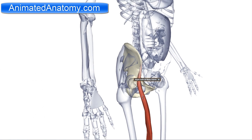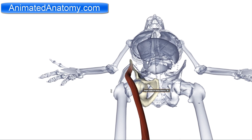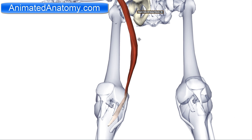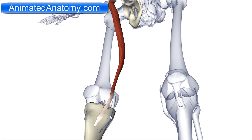The insertion of this muscle is in the pes anserinus, here. This insertion is actually very interesting — the pes anserinus is a connective tissue and it is the joint insertion of three muscles: the gracilis muscle, the sartorius muscle, and the semitendinosus muscle. I will talk about the other two later.